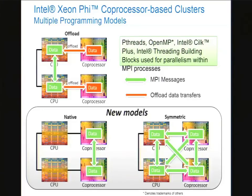On the right is what we call symmetric mode. Here every node has a Xeon node and one or more Phi coprocessors. When you put those all together, you really do have a heterogeneous network of individually homogeneous network nodes. If you think of the Xeon Phi coprocessor as a network node, everyone has an IP address, you can load up MPI ranks, and that allows you to run a more symmetric model where anyone can communicate with anyone.